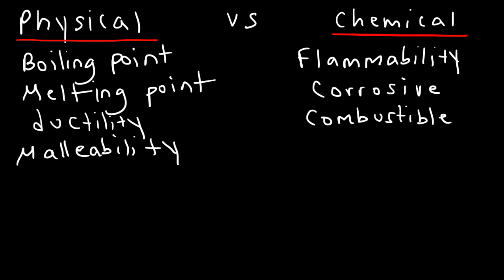Now, what about the word explosive? If a substance is explosive, are we describing a physical property, or its chemical property? Something that is explosive tends to be combustible. So, this is another chemical property — it has to do with a reaction. Like TNT is explosive. Sometimes it could just react with itself; it doesn't have to react with other things. But once you get it started, a chemical reaction will take place. So, whether something is explosive or combustible, it has to do with a chemical reaction. Those are chemical properties.